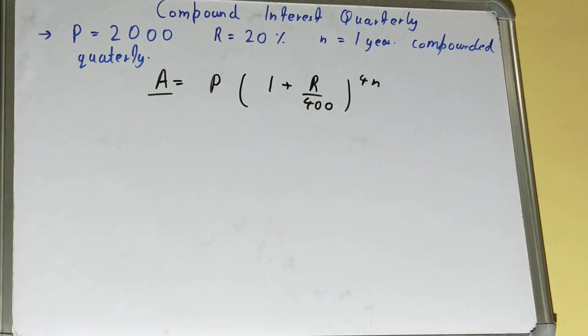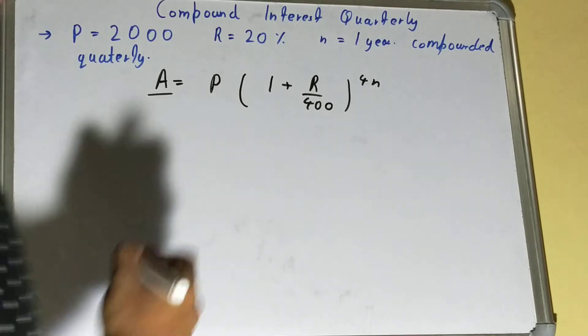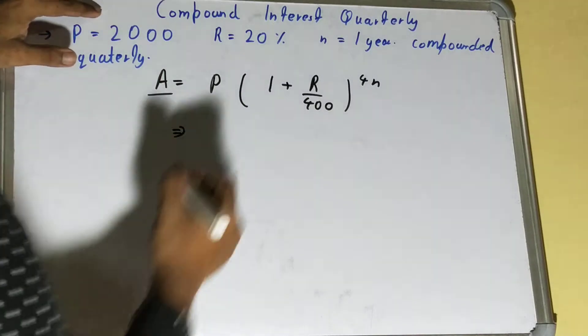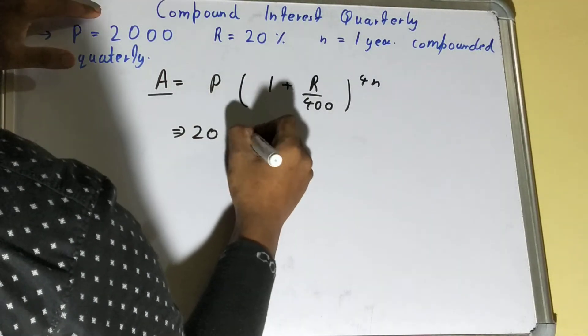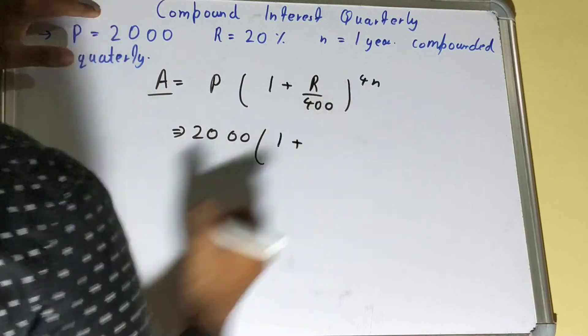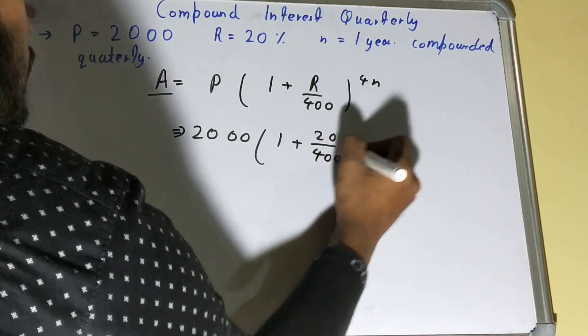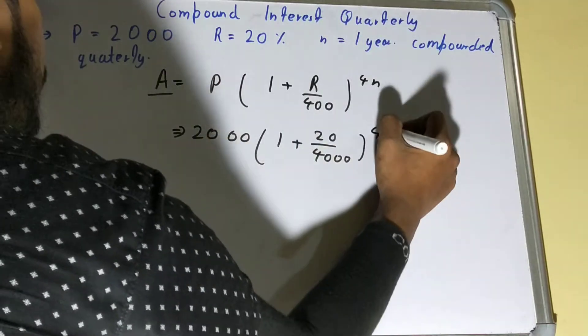Now we have the formula, just put in the values. We have the principal amount as 2000. We'll put that: 1 plus R is 20 upon 400, and our n is one year. n is basically the time.